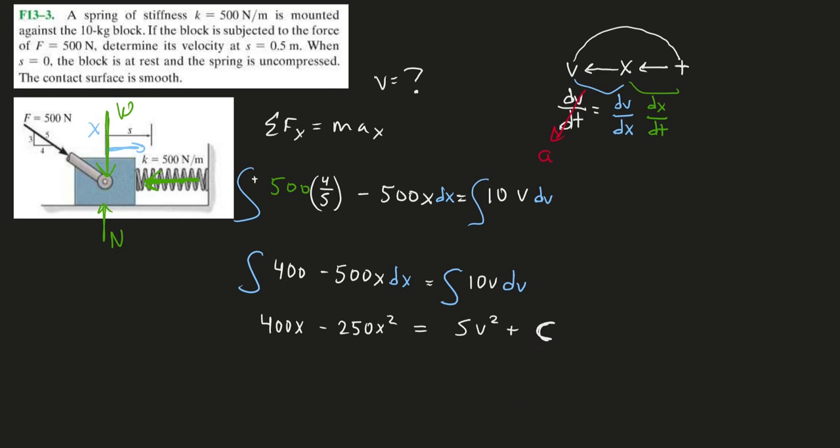They actually give it to us. When the block is at this position, it is not moving. What that means is at x equals zero, v equals zero. If I plug in zeros for all my variables, the only way for the left-hand side to equal the right-hand side is if c equals zero. So I erase my c.